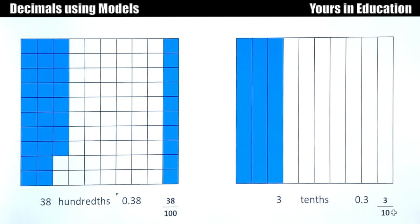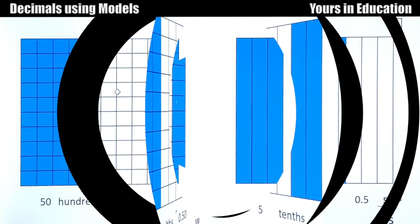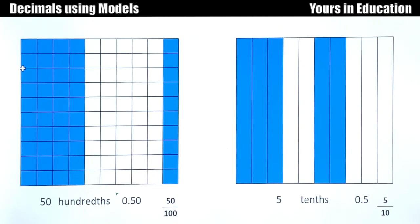On the left side we have 50 hundredths: 10, 20, 30, 40, 50 hundredths, which is 0.50. And if you think about it, this is half of the whole because 50 is half of 100. And on the right side we have 1, 2, 3, 4, 5—5 out of 10, 5 tenths. And 5 is also half of 10.